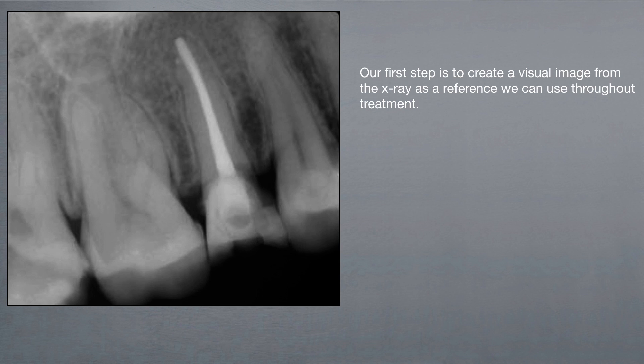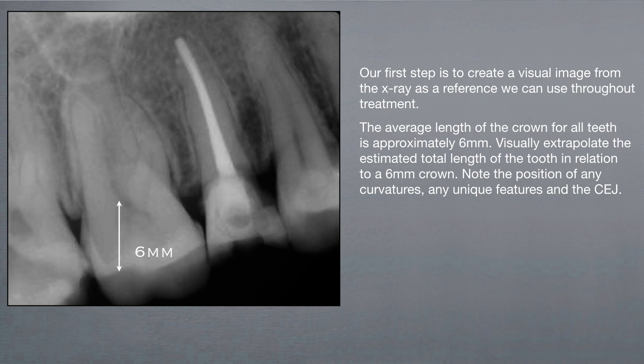Our first step is to create a visual image from the X-ray as a reference we can use throughout treatment. The average length of the crown for all teeth is approximately 6 millimeters. Visually extrapolate the estimated total length of the tooth in relation to a 6 millimeter crown. Note the position of any curvatures, any unique features, and the CEJ.